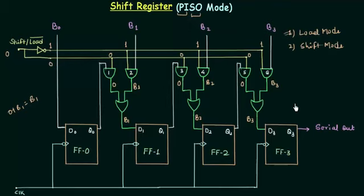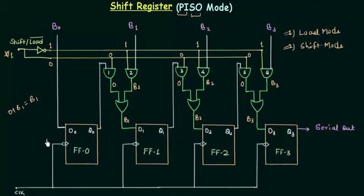Next we want the serial movement of the data — from flip-flop 0 to flip-flop 1, then 1 to 2, and 2 to 3, with the data stored in flip-flop 3 as the output. This is our second aim and it is achieved by the shift mode. During shift mode, we change the input from 0 to 1, which gives us 0 here and 1 at this point, and we switch the inputs to the AND gates accordingly — gates 1, 3, and 5 get 1, while gates 2, 4, and 6 get 0.